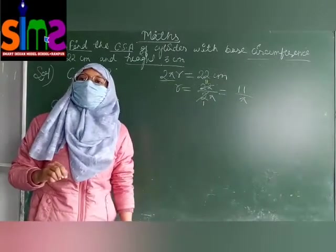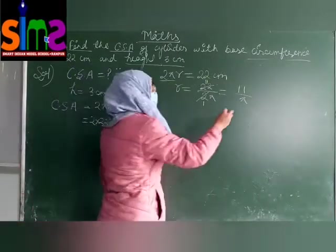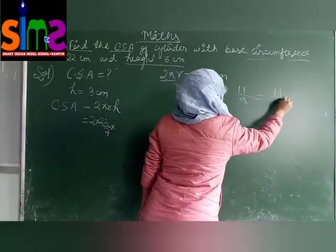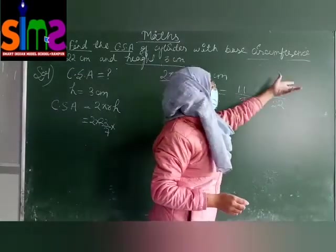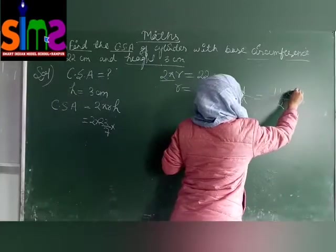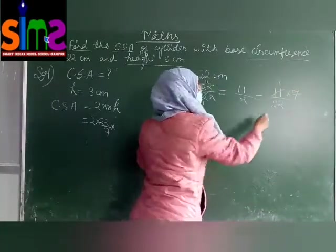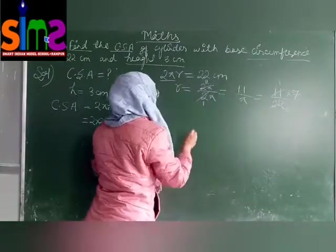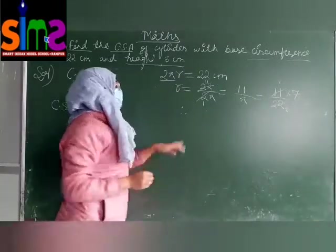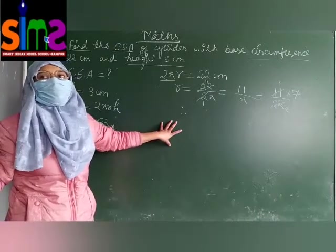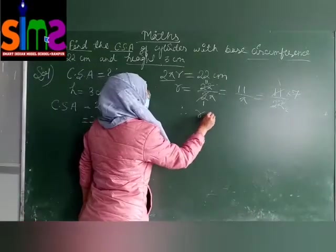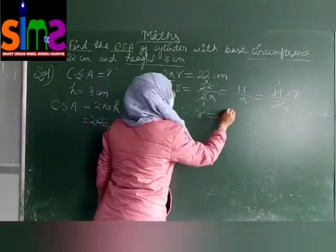What is the value of pi? 22 upon 7. Again 22 upon 7. And upon 7 will become in the multiplication form. 11 once are 11. It is the sign of BODMAS. You need to apply the sign of BODMAS. Therefore, the value of r is 7 upon 2.